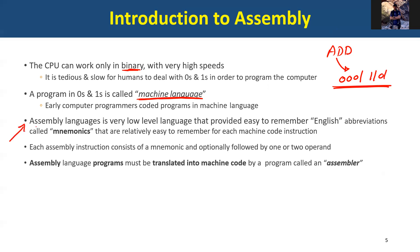Later, engineers introduced assembly language. Assembly language converts these binary codes into what's called mnemonics — the M is silent. It's in English and it's very easy to remember. Each mnemonic, optionally, will be followed by two operands.